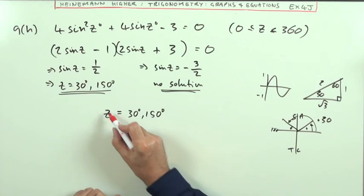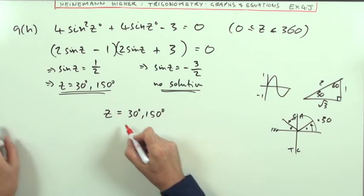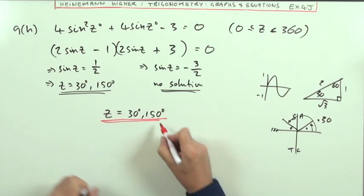For those two parts, putting them together, means z is going to be 30 degrees or 150 degrees.